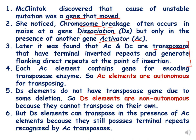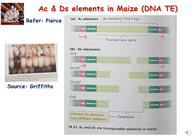We will understand it through photographs and flow charts. This photograph is from Peers. Here you can see a typical transposon with a transposase gene in the center, flanked by inverted repeats represented by dark green opposite arrows, and then purple direct repeats generated in the host. You can also see different DS elements — DS9, DS2, D1, DS2-D2, DS6 — showing that different DS elements have different deletions.